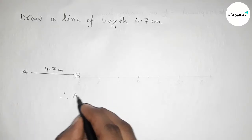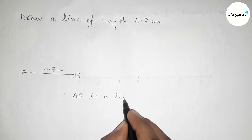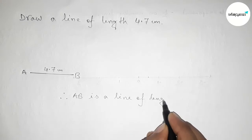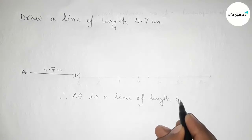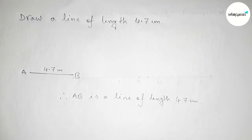Therefore AB is a line of length 4.7 centimeter, and by this way you can draw a line of length 4.7 centimeter. So that's all, thanks for watching. If this video is helpful to you then please share it with your friend. Thanks for watching.